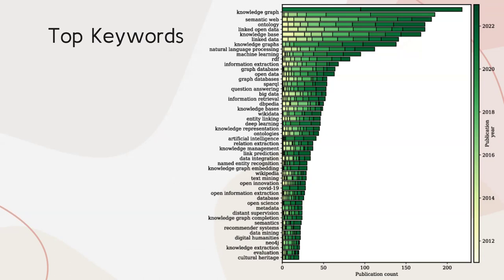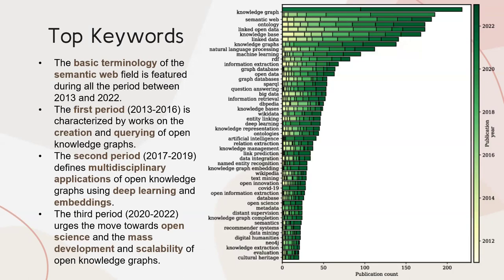Let's move now to the top keywords. Through our analysis of the top keywords of open knowledge graph research, we found that the basic terminology of the semantic web field is featured throughout the entire period between 2013 and 2022. We also found that several keywords appeared mainly during three big periods: 2013–2016, characterized by works on the creation and querying of open knowledge graphs; 2017–2019, defining multi-disciplinary applications using deep learning and embedding; and 2020–2022, urging the move towards open science and the mass development and scalability of open knowledge graphs.